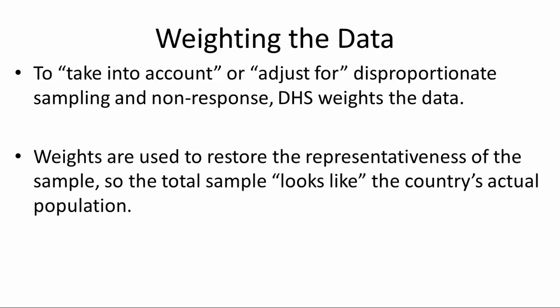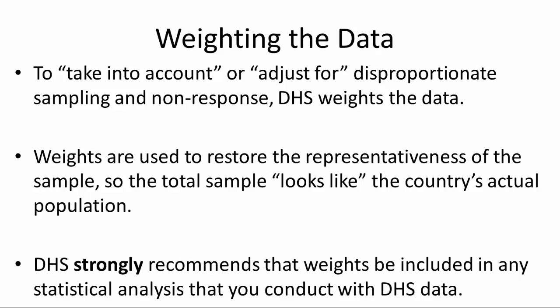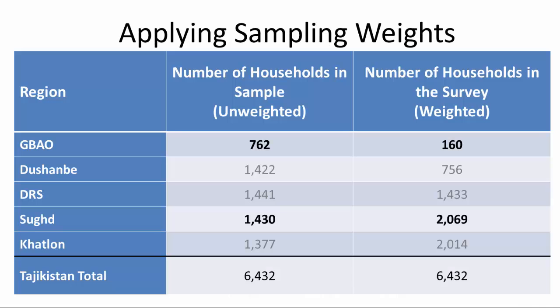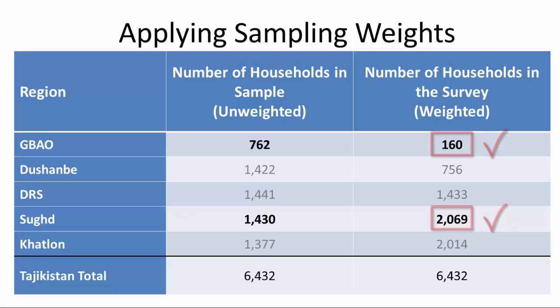To take into account and adjust for disproportionate sampling and non-response, DHS weights the data. Weights are used to restore the representativeness of the sample so the total sample looks like the country's actual population. As standard practice, DHS always uses weights when performing statistical analysis, and we strongly recommend that weights be included in any statistical analysis you conduct with DHS data. Once we apply weights to the 2012 Tajikistan DHS data, the weighted number of households from Gabau is only 160 out of 6,432, which is close to Gabau's true percentage share of the population. Similarly, the weighted number of households in Sugd is 2,069 out of 6,432, close to Sugd's true share. Note that actual and weighted numbers are less than the target, as not all selected households provide an interview. Response rates can be found on page 11 of the final report.